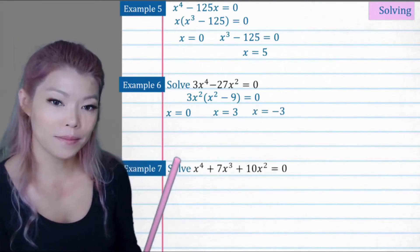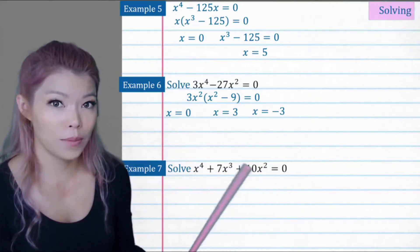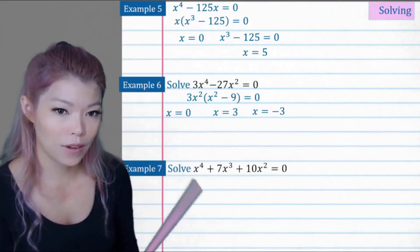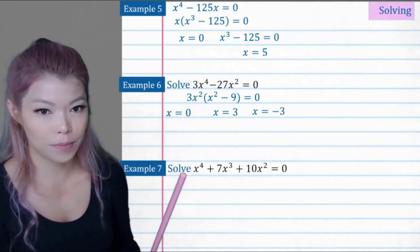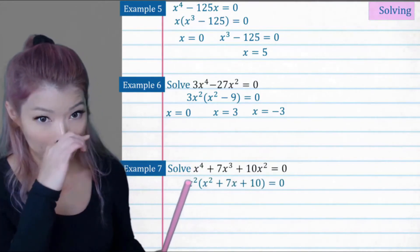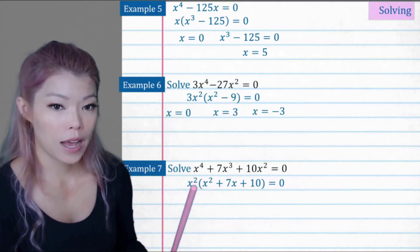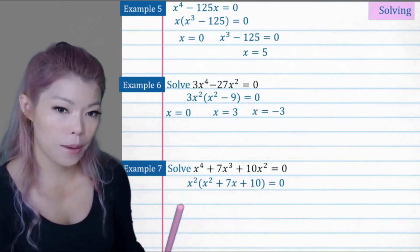Example seven. So for that, that looks pretty scary. But remember, take the highest common factor out and it'll look a lot more simple. So x squared, take x squared out. So we have that. So x is equal to zero for that part.